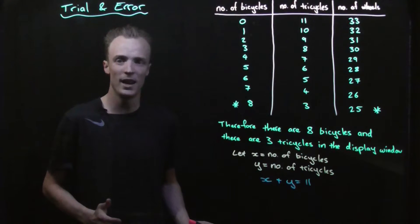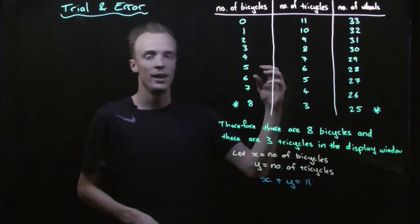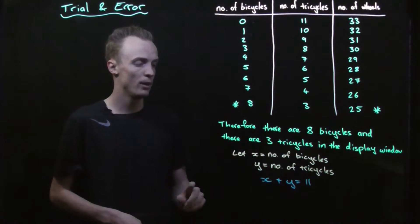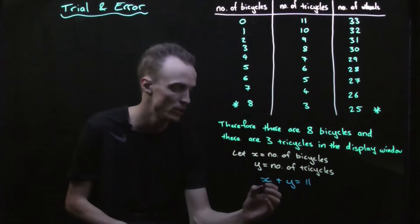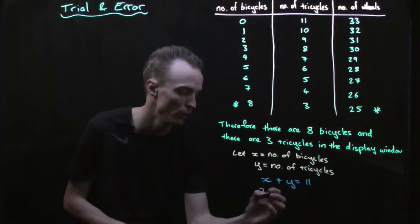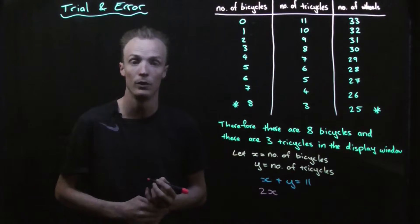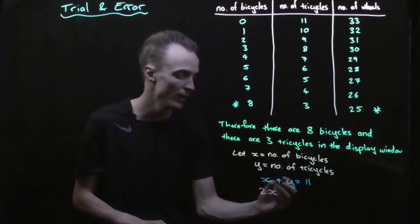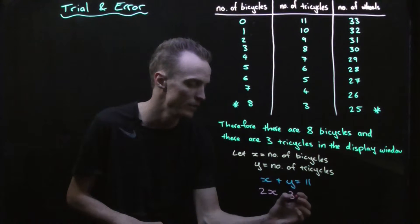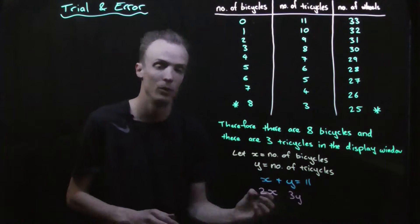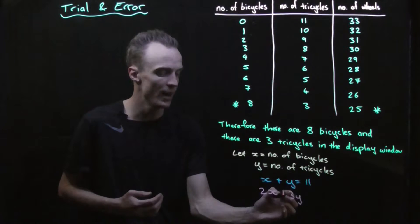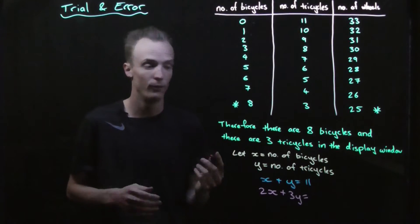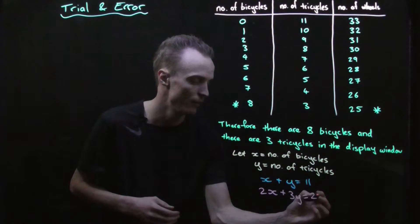We can do the same with the total number of wheels. To calculate the total number of wheels we multiply the number of bicycles by 2, so 2x. Then we multiply the number of tricycles by 3, so 3y. Adding them together gives the total number of wheels, which in this problem was 25.